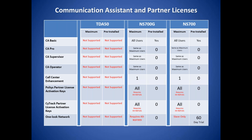The NS700 and the NS700G are both compatible with Q-SIG networking, and the NS700 can also be a slave in a one-look network. In a one-look network, all systems are programmed from a master NS1000, significantly reducing programming time and adding to ease of maintenance. The TDA50 does not support a one-look network.